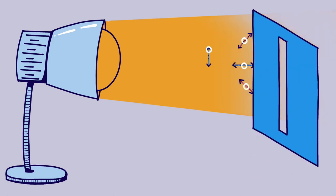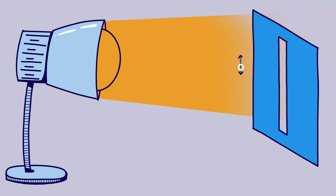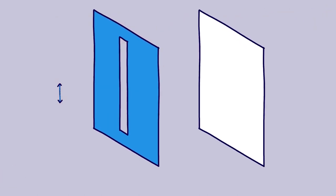With polarized filters, we can filter photons. Then, for example, only the photons that oscillate up and down can pass through. These are then called vertically polarized.